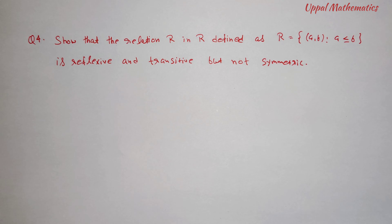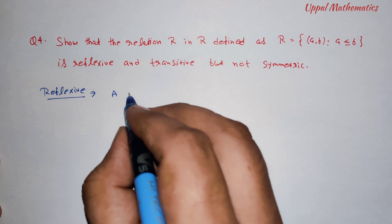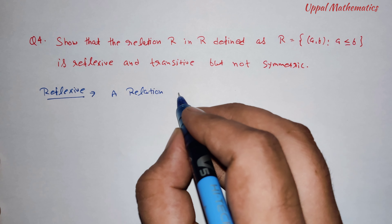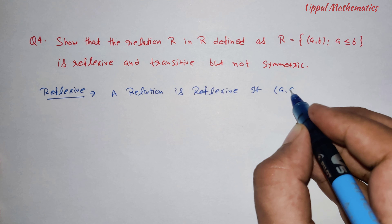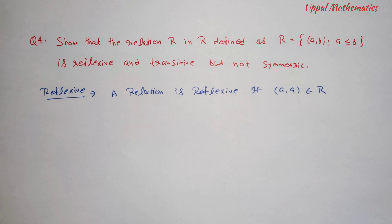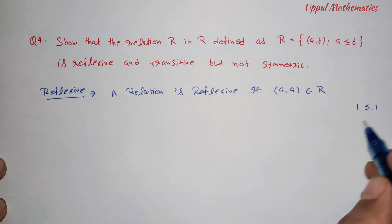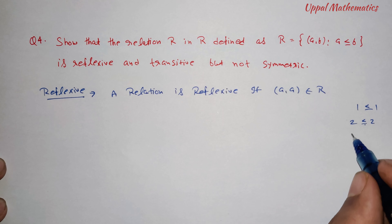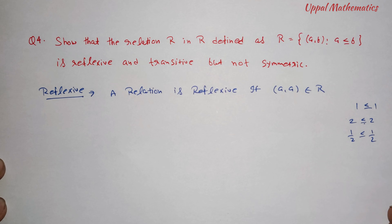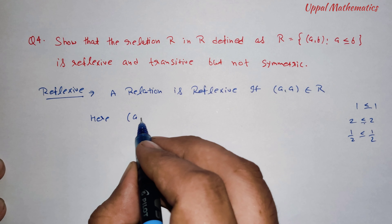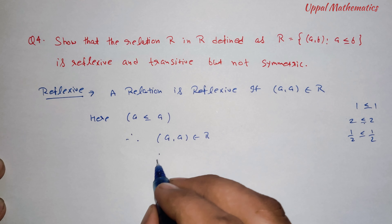First, let's show reflexive. A relation is reflexive if (A, A) belongs to R. For any real number A, we check: A is less than or equal to A — this holds by the equal sign. For example, 1 ≤ 1, 2 ≤ 2, and any fraction equals itself. Therefore A ≤ A, so (A, A) belongs to R, and R is reflexive.